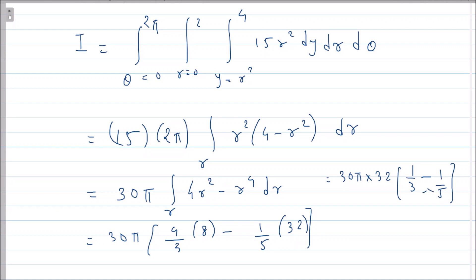And even 32 will come outside. I have 1/3 - 1/5. If I do cross multiplication, 5 - 3 is 2. So 30π × 32 × 2 / 15. That 15 ones are 15, twos are... so this is nothing but 128π.